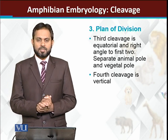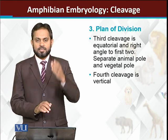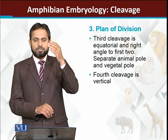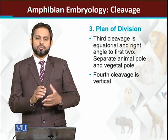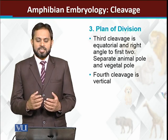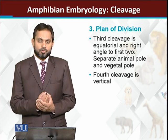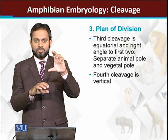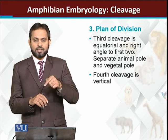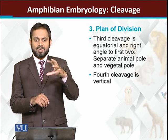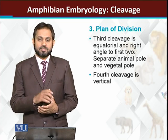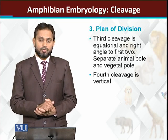The fourth cleavage is again longitudinal or vertical, dividing each cell into two. The first cleavage forms two cells, the second forms four cells, the third forms eight cells — four in the upper tier and four in the lower tier. The fourth cleavage divides each of those cells in two, giving eight upper cells and eight lower cells, resulting in a total of sixteen cells after the fourth cleavage.